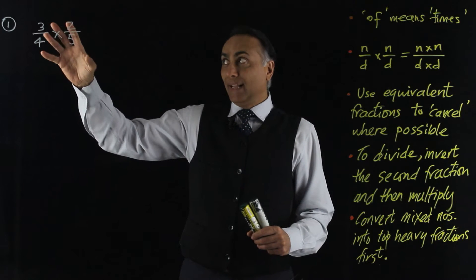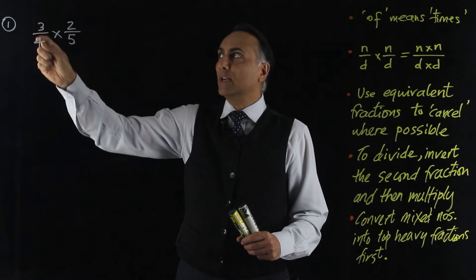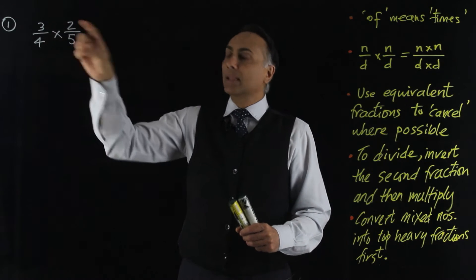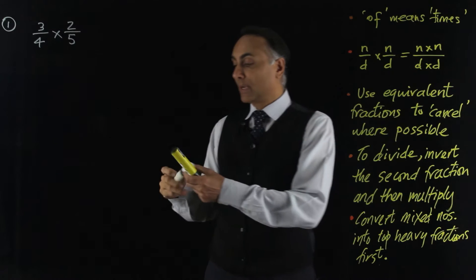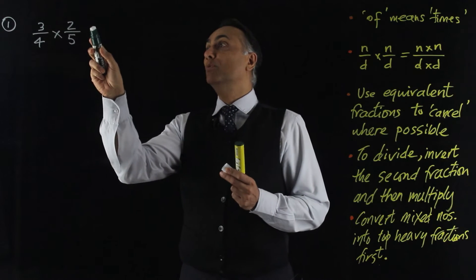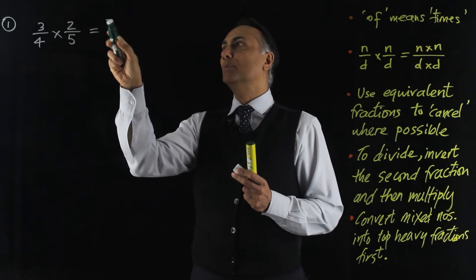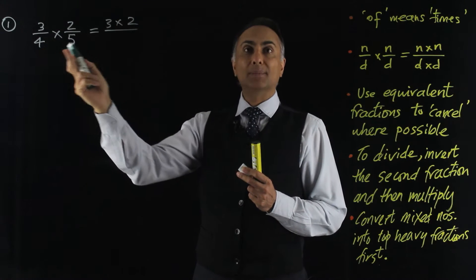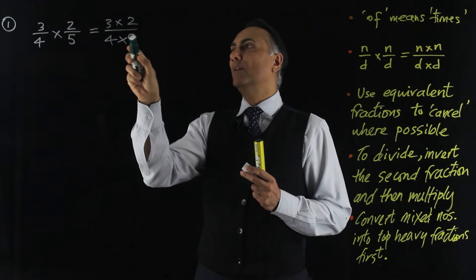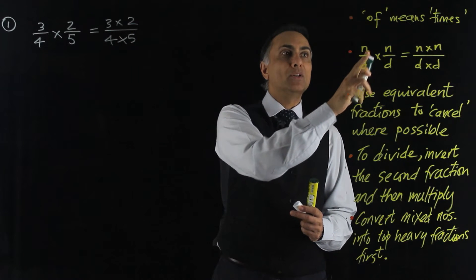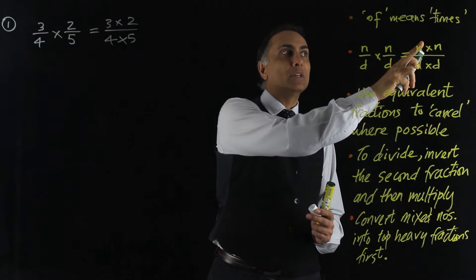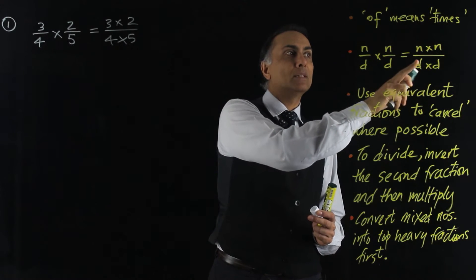The next thing is that if you have numerator over denominator times numerator over denominator, that means numerator times numerator, so three times two, over denominator times denominator, four times five. That's what I mean here, numerator over denominator times numerator over denominator is equal to numerator times numerator over denominator times denominator.